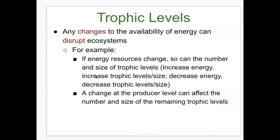Any changes in the availability of energy can disrupt an ecosystem. If energy resources change, so can the number and size of the trophic levels — causing increases or decreases in trophic level size. A change at the producer level, among chemoautotrophs and photoautotrophs, can affect the number and size of all remaining trophic levels above, since producers convert the initial source of energy into all usable forms needed by heterotrophs.